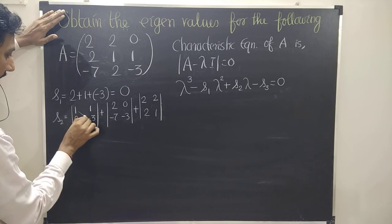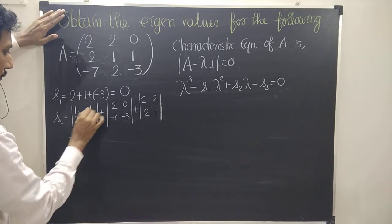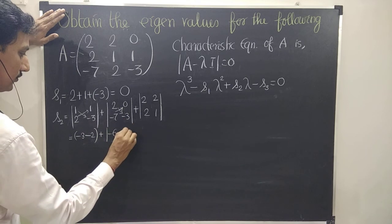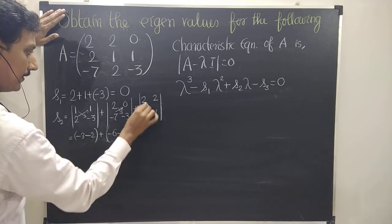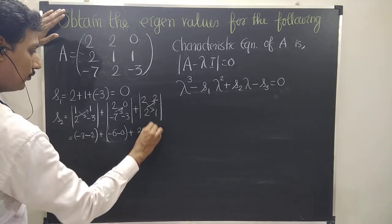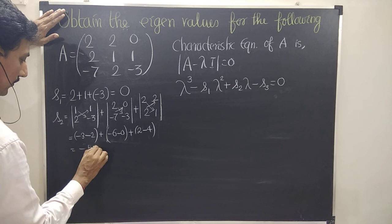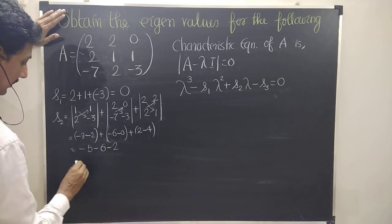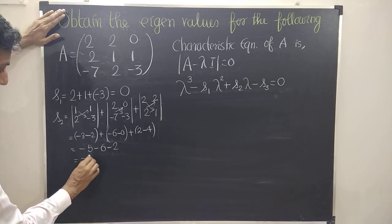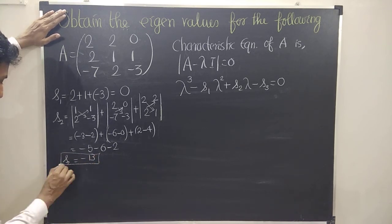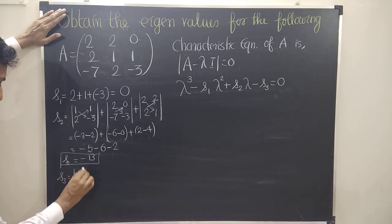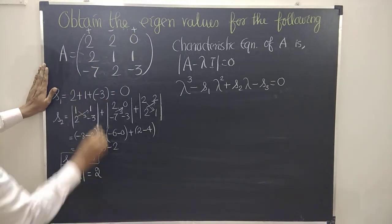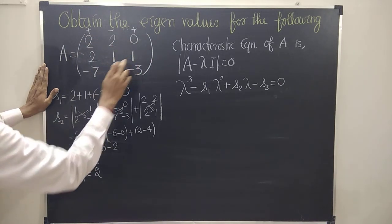Let us find the values. First minor: 1 into minus 3 is minus 3, minus 2 into 1 is minus 2. Plus: second minor: 2 into minus 3 is minus 6, minus minus 7 into 0 is 0. Plus: third minor: 2 into 1 is 2, minus 2 into 2 gives minus 4. So the value balance is 2, 1, 1, 2, minus 3.